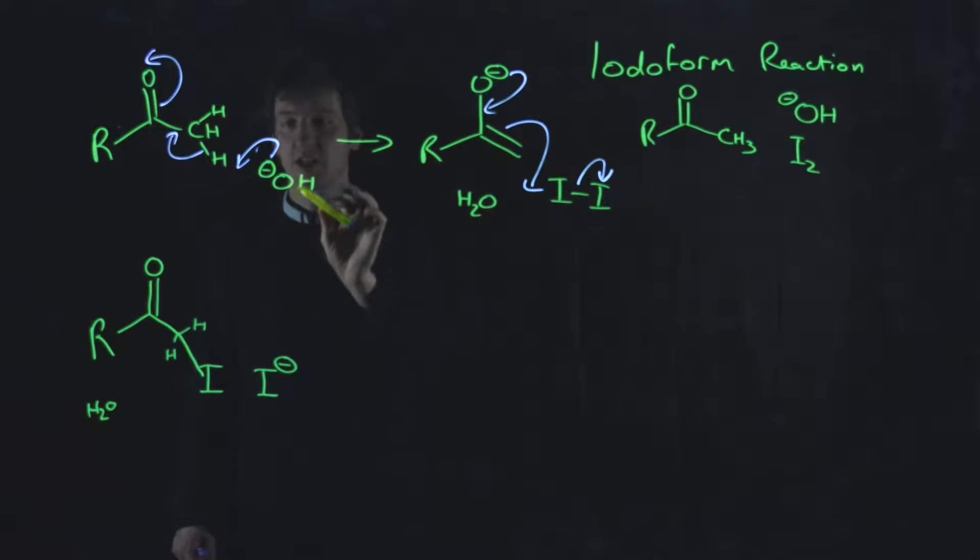And in the case, usually you would use an excessive base. But even if there was only one equivalent of base, what you have to consider now is that this is probably going to be much more acidic than that, because this also has an electron withdrawing halogen on it. So this will get deprotonated before that molecule will get deprotonated. So let's put in another molecule of our base, our hydroxide. And what happens?